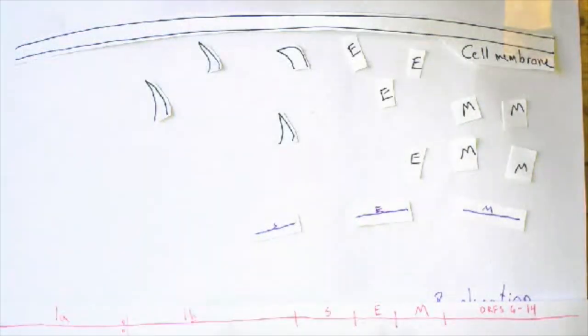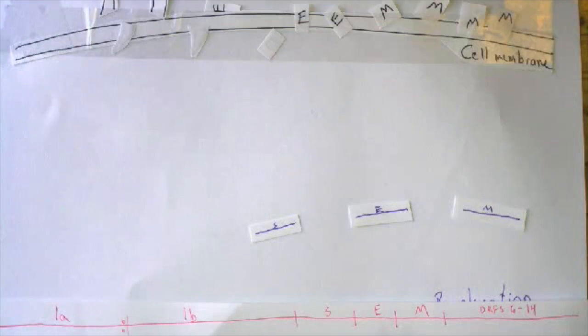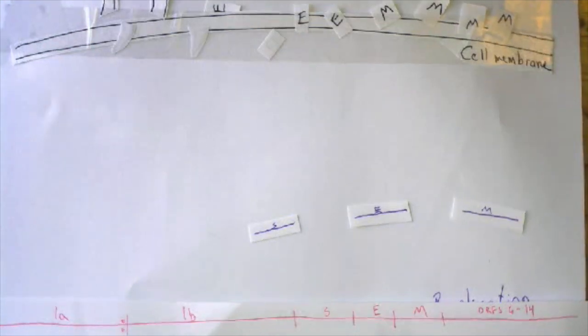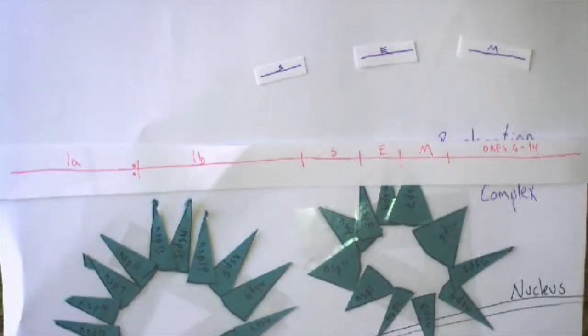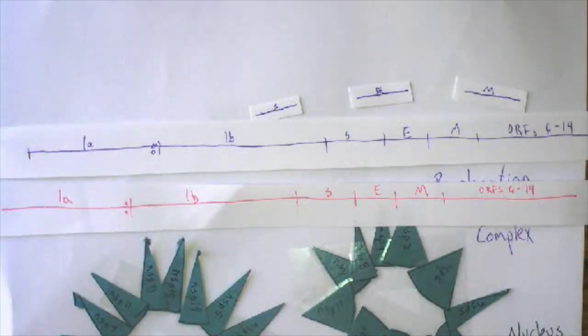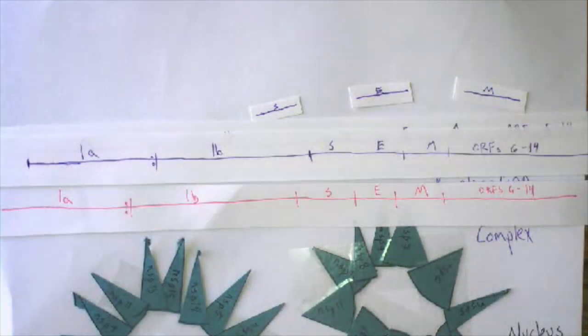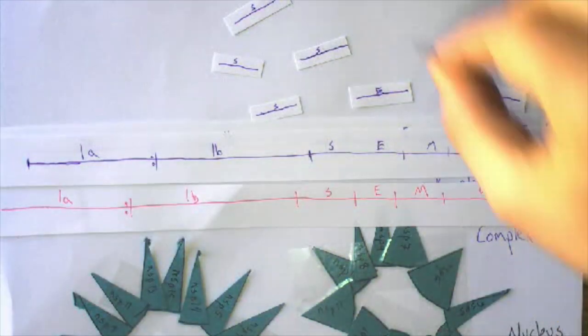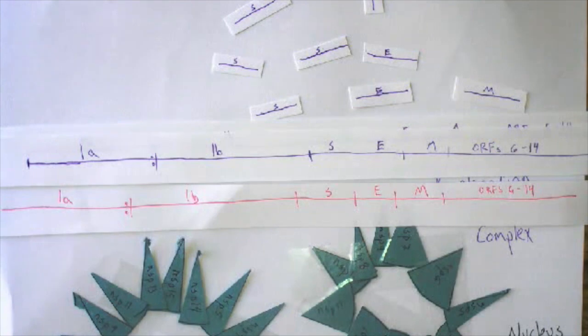At the same time, the negative strand is also used to make positive strands of the whole viral genome. So right now, the replication-transcription complex is doing two things at the same time. It's producing mRNA for the structural pieces of the virus, and it's also producing copies of the viral genome. This all continues for a while.